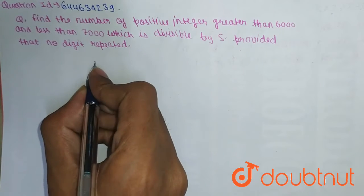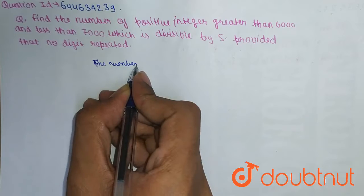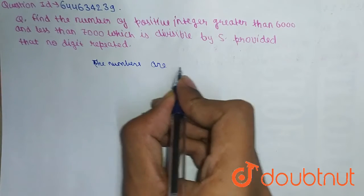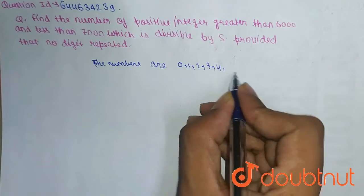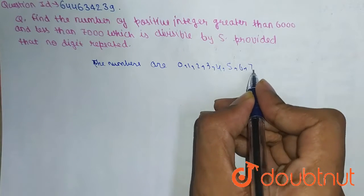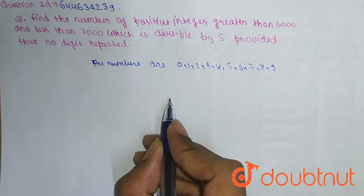So the numbers are 0, 1, 2, 3, 4, 5, 6, 7, 8, 9. From this we have to choose. So firstly, as here we have given a 4-digit number...